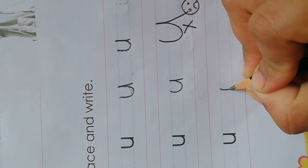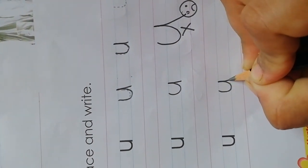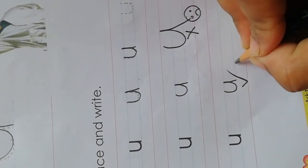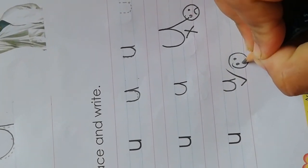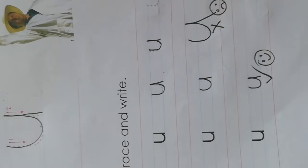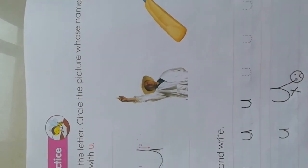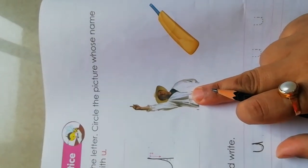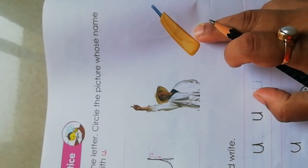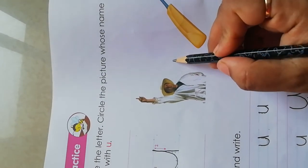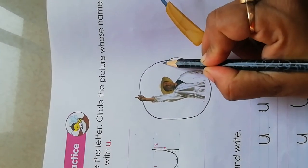Now circle the picture whose name starts with u. U for umbrella. U for bat, hotel—no. U for umbrella. Okay.